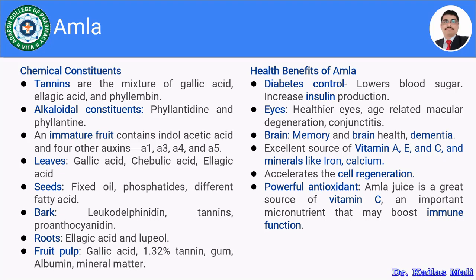These are the chemical constituents of Amla. It mainly comprises tannins and ascorbic acid, certain alkaloidal principles, minerals, and proteins. Moving towards the health benefits of Amla: as it is a rich source of vitamin C and tannins, Amla has many health benefits. The first benefit is its ability to reduce blood sugar levels, making it useful in the management of diabetes mellitus.